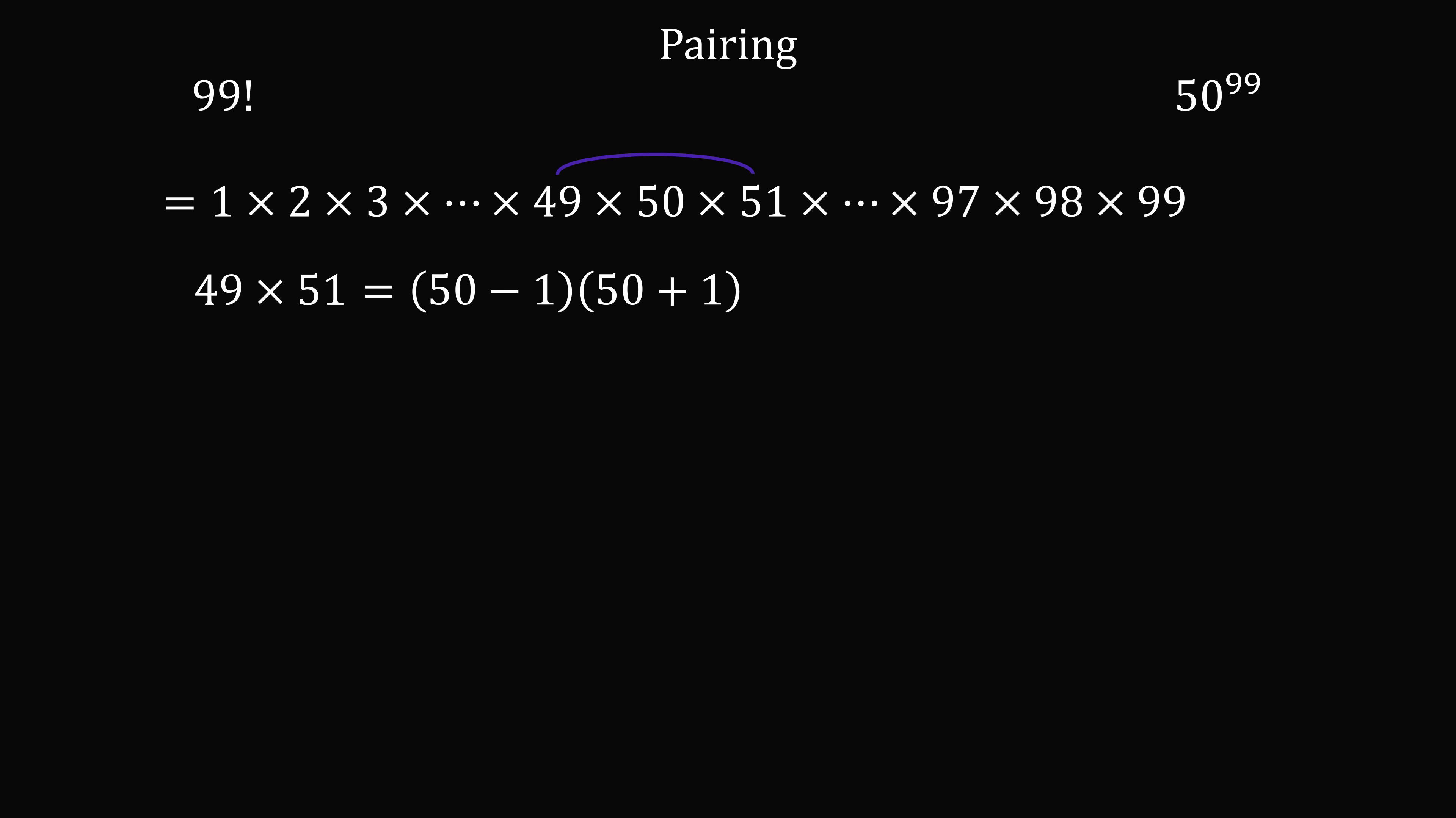49 times 51 is equal to 50 minus 1 multiplied by 50 plus 1, which is equal to a difference of squares, 50 squared minus 1 squared.